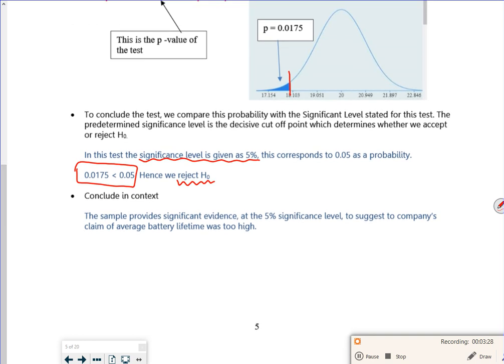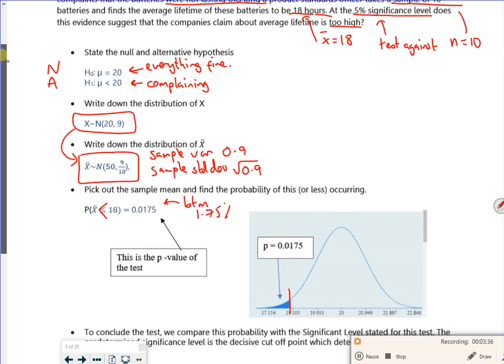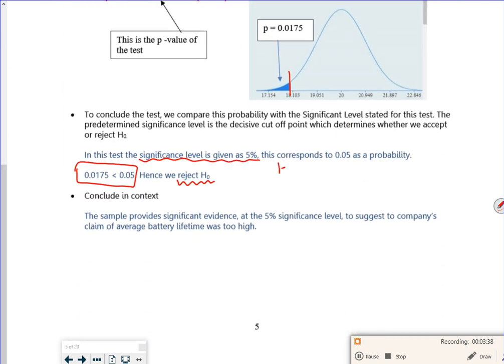So what I'm saying is, on average, the battery life I've got is too far away from where it should be. So what I'm saying here is that my x-bar equals 18 is too far away from the mu equals 20. That's what I'm saying, it's too far away.